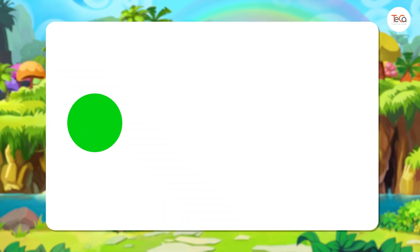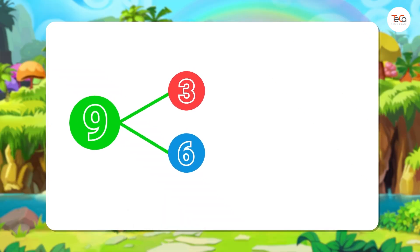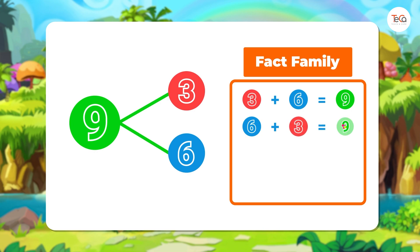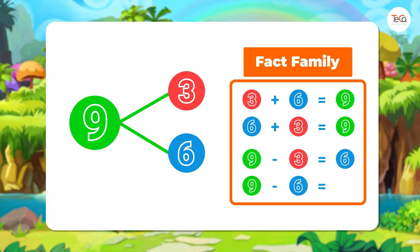Next, for this number bond, we can write the fact family: 3 plus 6 equals 9, 6 plus 3 equals 9, 9 minus 3 equals 6, 9 minus 6 equals 3.